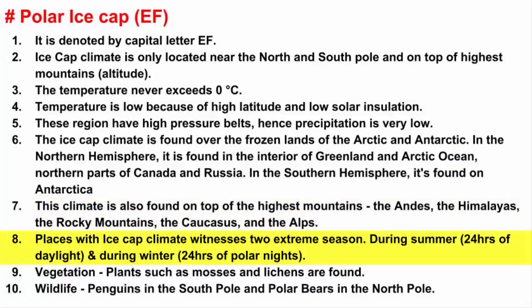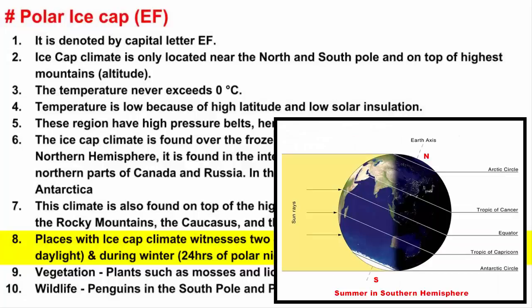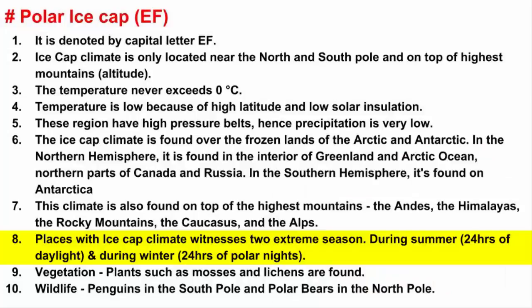Places with ice cap climate witness two extreme seasons. The seasons are determined by the amount of light. During the summer, there is nearly 24 hours of light, since the pole is pointed towards the sun. And during the winter, the pole is facing away from the sun, which causes nearly 24 hours of darkness.